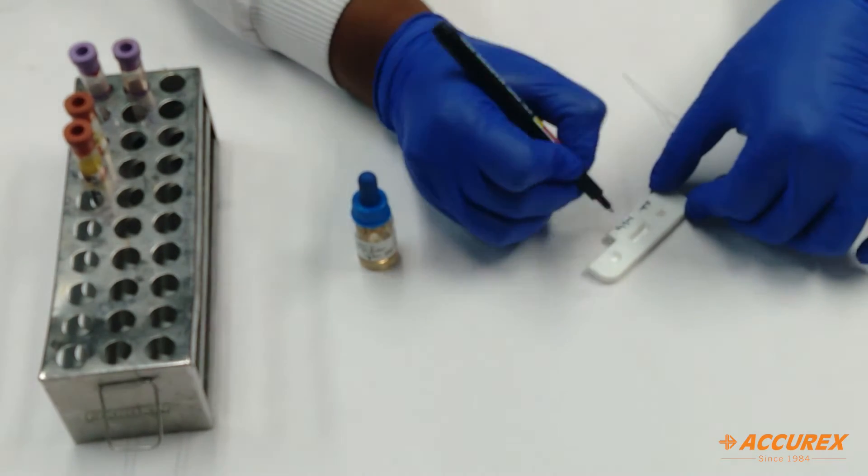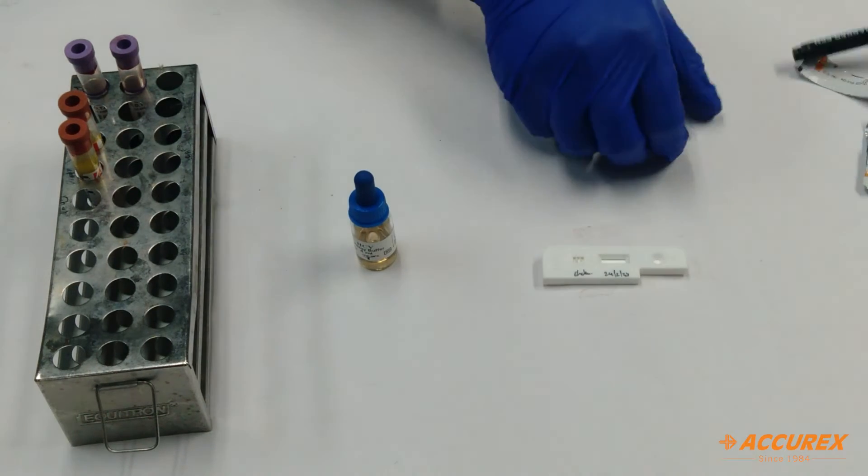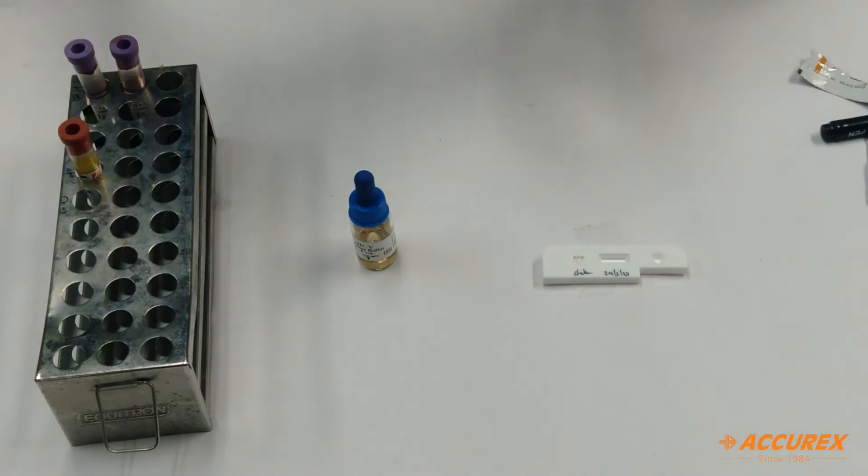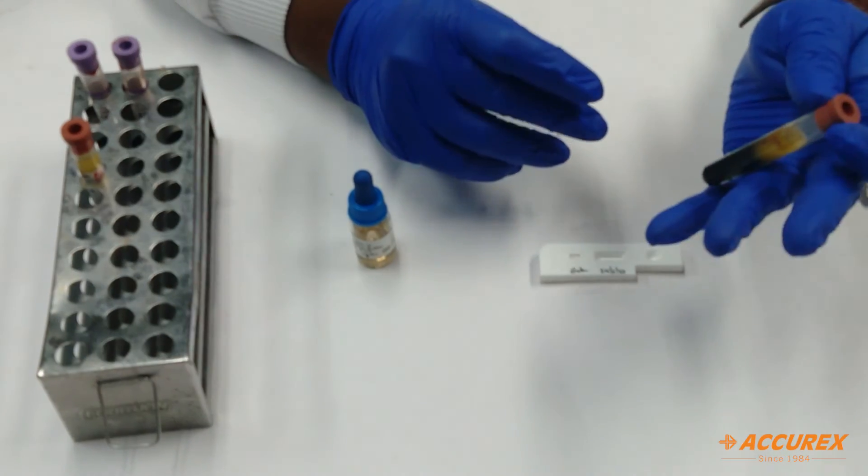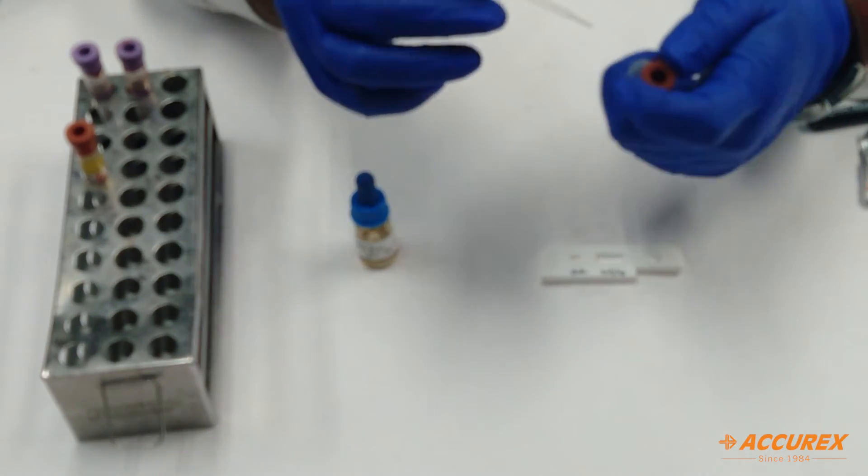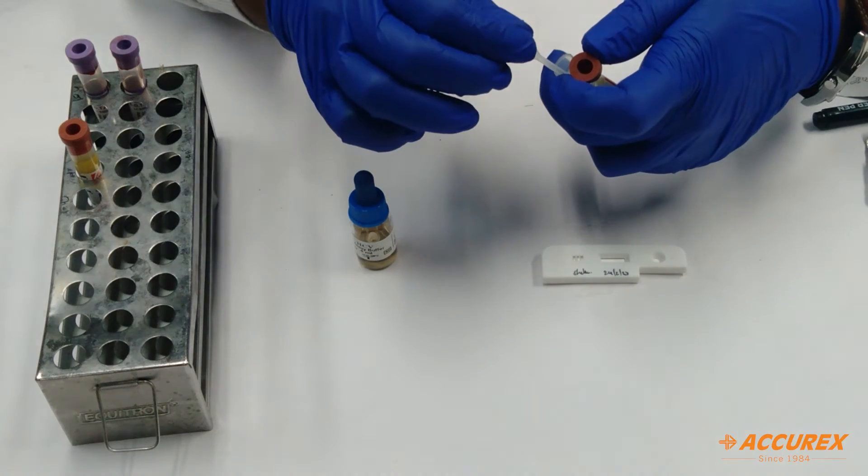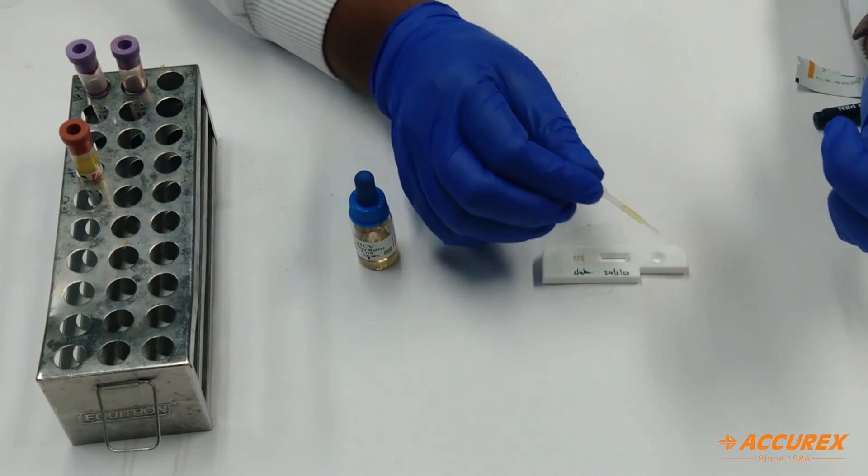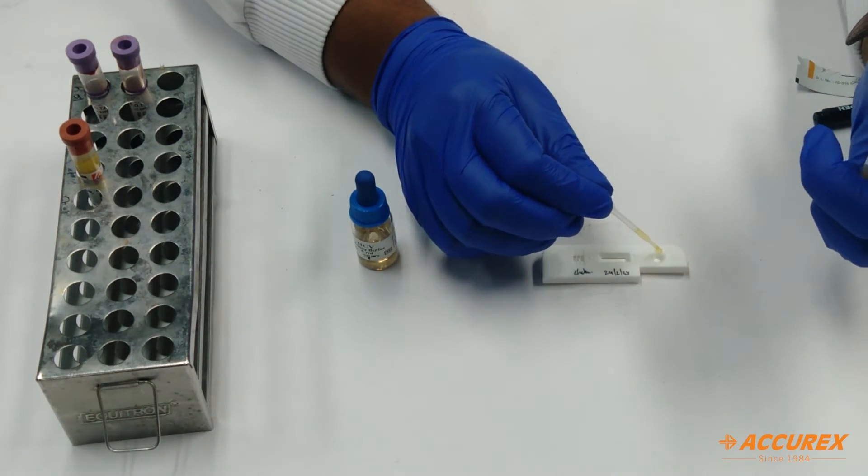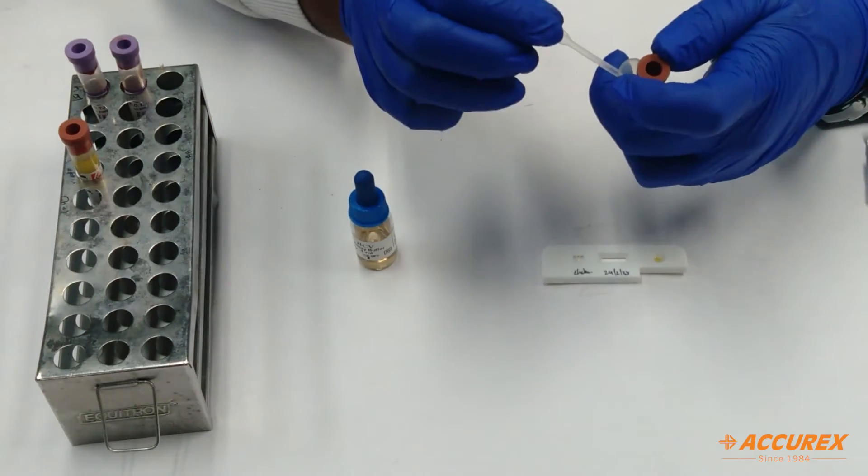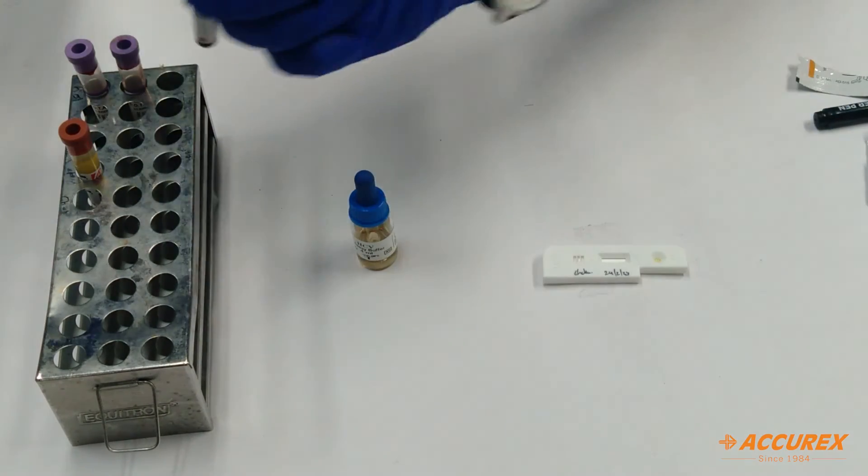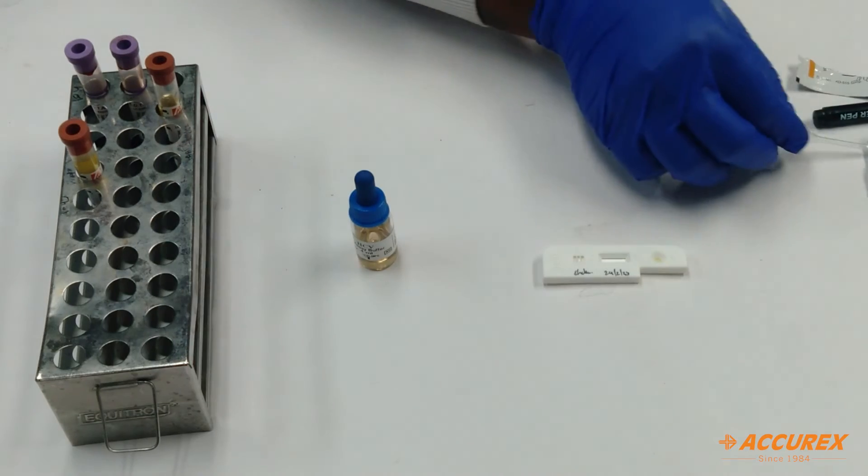And the date. For the sample, you need to take serum sample, one drop. I've already collected the serum sample in a plain tube. You need to add one drop of serum sample in the sample well.